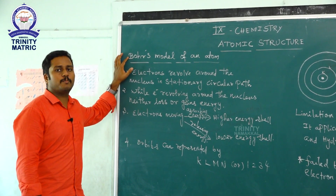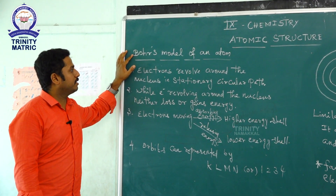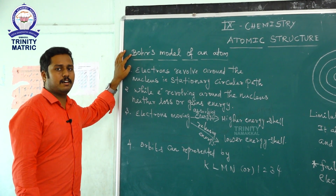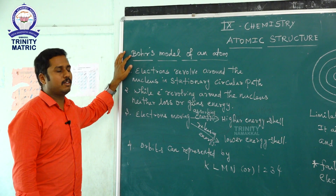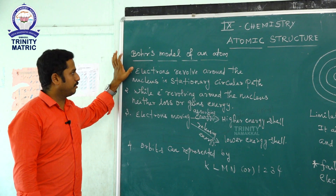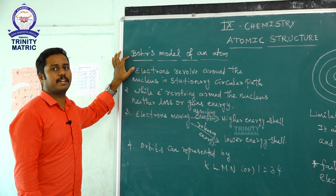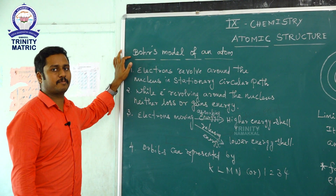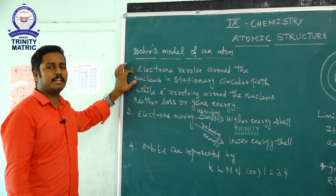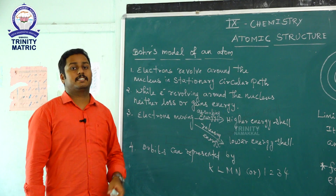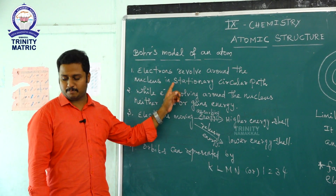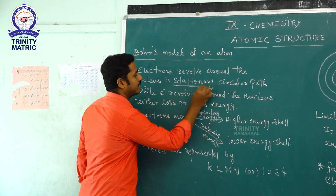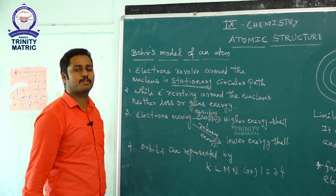The next topic is the Bohr model of an atom. The Rutherford model's limitation was that it could not explain the stability of the atom. Bohr's model is very useful in explaining the stability of the atom. The first postulate: electrons revolve around the nucleus in a stationary, fixed circular path. The second postulate: while the electron revolves in this fixed path, it should not gain or lose energy — there is no energy change in the fixed path.